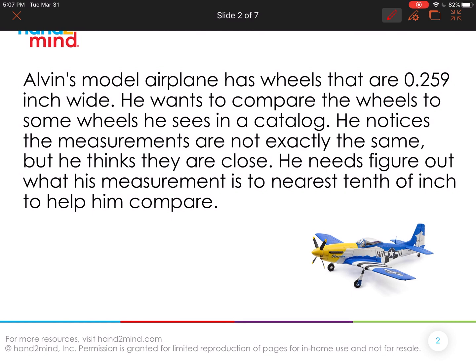Well, because what he's trying to figure out, it says, is he's trying to the nearest tenth, right? So the nearest tenth of an inch to help him compare. So what do we know about this? We know that Alvin's model airplane wheels are 0.259 inches wide. So 0.259 inches wide. That's what we know.